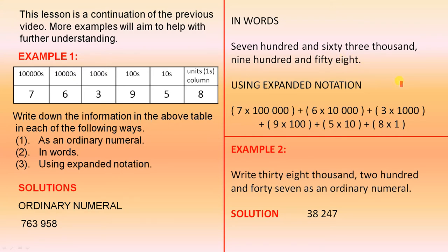Using expanded notation. We know that the 7 is in the 100,000th column. So we've got 100,000, 10,000, 1,000, the 100, the 10, and the 1's.